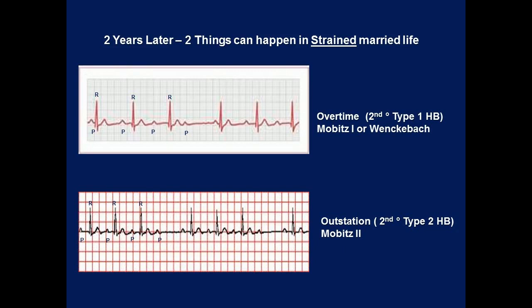There is intermittent failure of atrial depolarization to reach the ventricle. Upper ECG strip on the left: Rossley will be with Pazia every day — P followed by QRS.